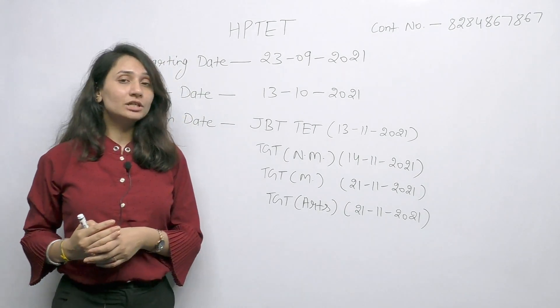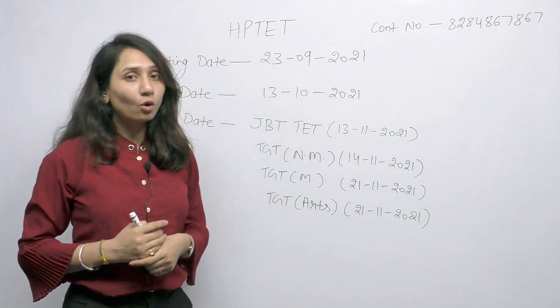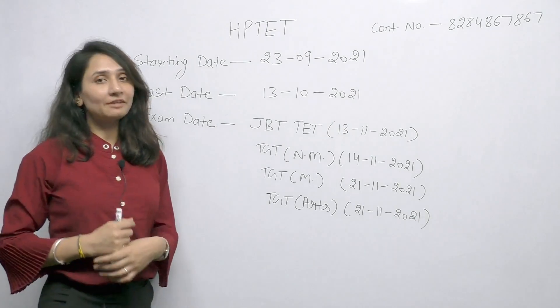Regarding the fee structure, the general category fee is 800 and for SC, ST and OBC, the fee is 500.